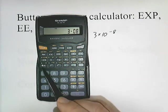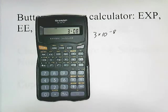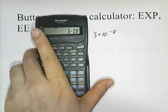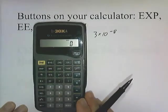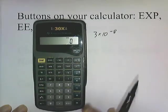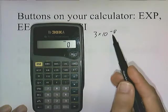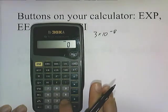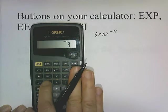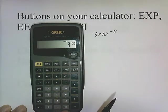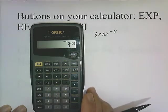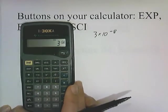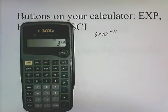Instead of an EXP button, some calculators have a double-E button. Here's a calculator that has a double-E button right here. The procedure is the same: to enter 3 times 10 to the negative 8, press 3, then double-E, then the plus-minus button, then 8. The double-E button works the same as the EXP button.